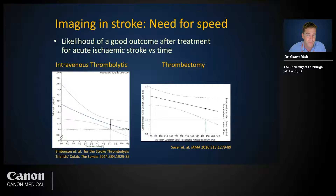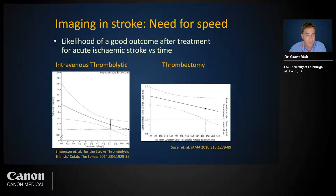Time is brain. According to Jeff Saver, for every minute of an ischemic stroke, 2 million neurons, 14 billion synapses, and 12 kilometers of myelinated fibers are destroyed. These graphics show how the likelihood of benefit after both thrombolysis and thrombectomy drops with time elapsed after ischemic stroke onset. The 95% confidence intervals cross the line of no effect around five hours for thrombolysis and around seven hours for thrombectomy. Thus the European stroke guidelines indicate that thrombolysis can be offered up to four and a half hours from stroke onset, and thrombectomy up to six hours from stroke onset.